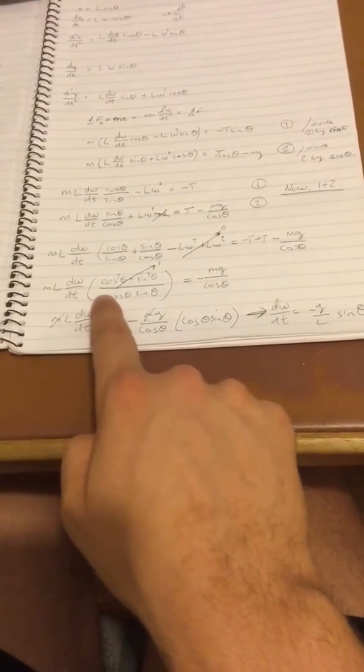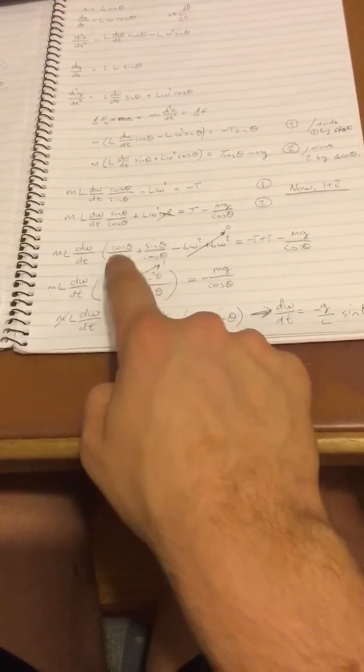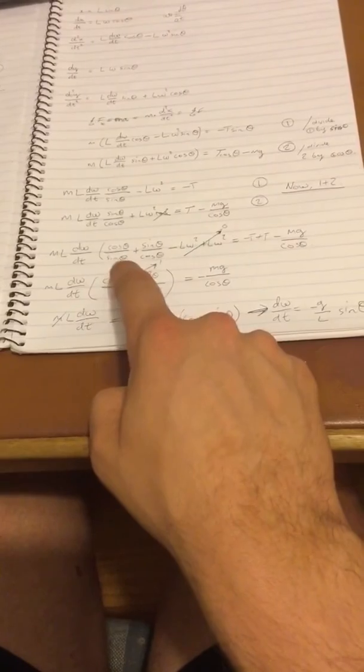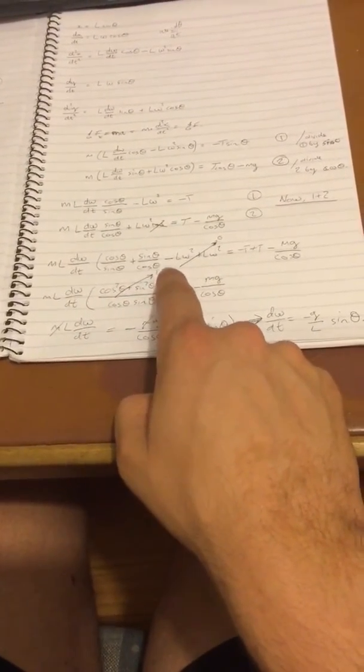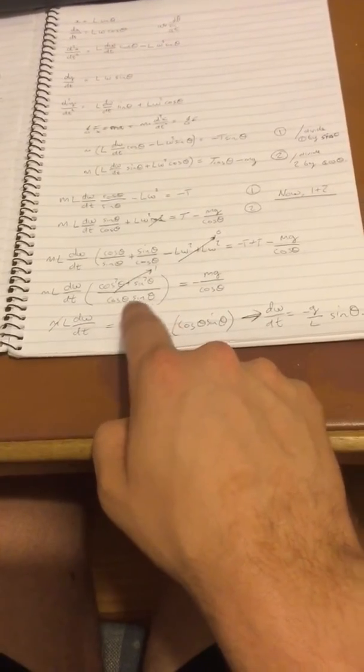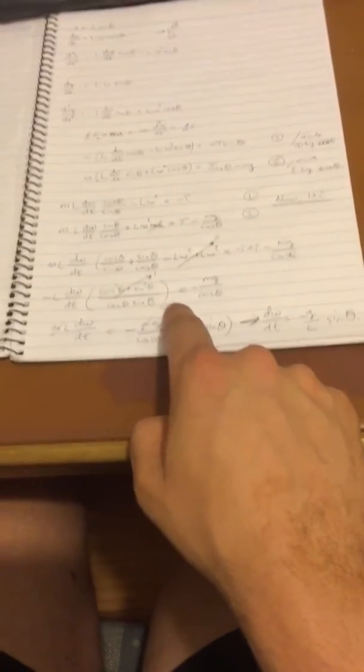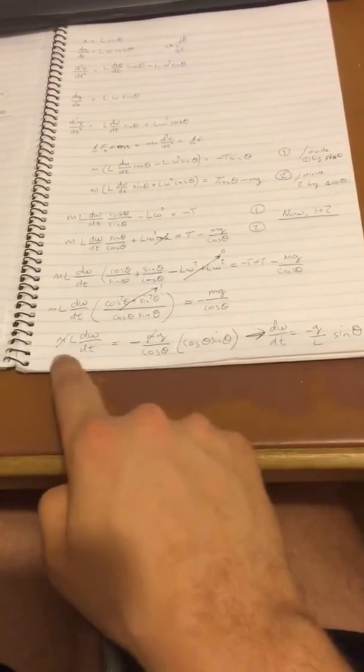M L d omega dt. So we just multiply them by their different denominators. You get a cosine squared plus sine squared theta on the top, which is just 1 over cosine squared. Oh sorry, cosine theta sine theta equals minus mg cosine theta.